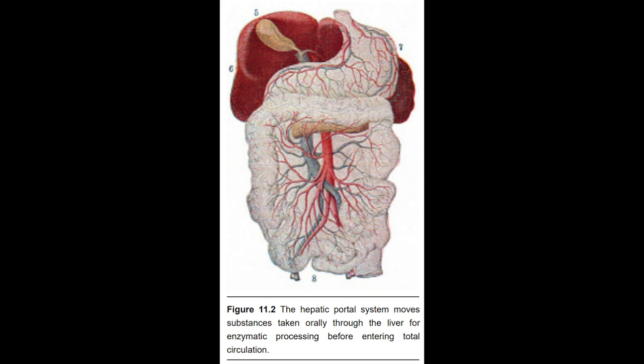Substances ingested orally are absorbed through the gut wall and into the hepatic portal system, a branch of the circulatory system that surrounds the gastrointestinal tract. Before entering systemic circulation, this blood is passed through the liver, where degradation enzymes destroy some amount of the drug. This process is called first-pass metabolism, and causes a decrease in the amount of drug that gets to its target of action. Conversely, some drugs are inactive until they get converted into another substance after enzymatic processing — these substances are called prodrugs.